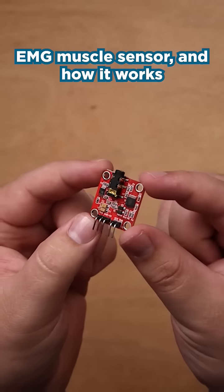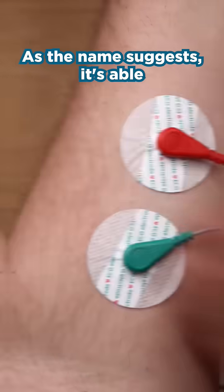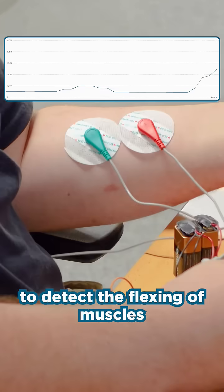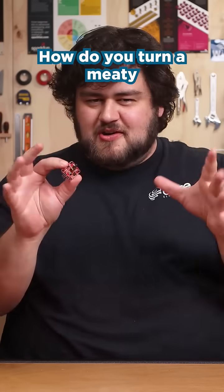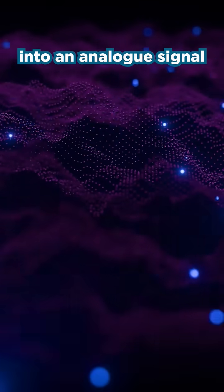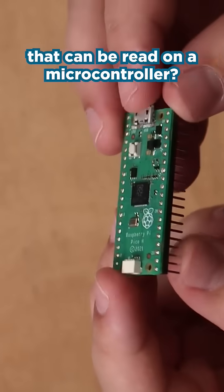This is an EMG muscle sensor and how it works is pretty darn crazy. As the name suggests, it's able to detect the flexing of muscles in your body, but think about that for a sec. How do you turn a meaty biological process into an analog signal that can be read on a microcontroller?